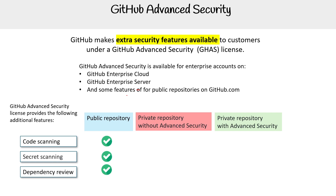For public repos, you get full access. For private repos without the advanced security license, you get nothing. And if you have the advanced security license, you get them all.